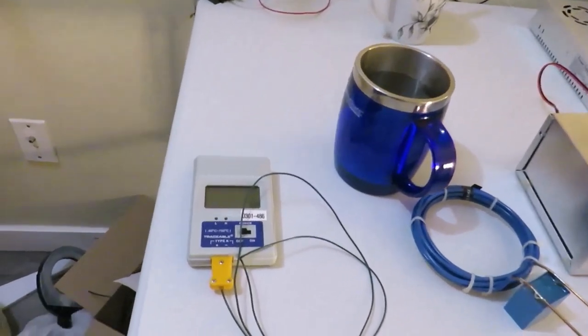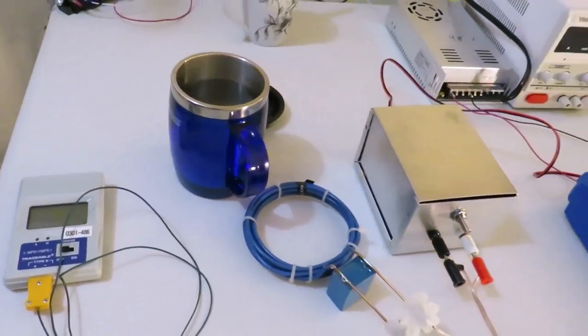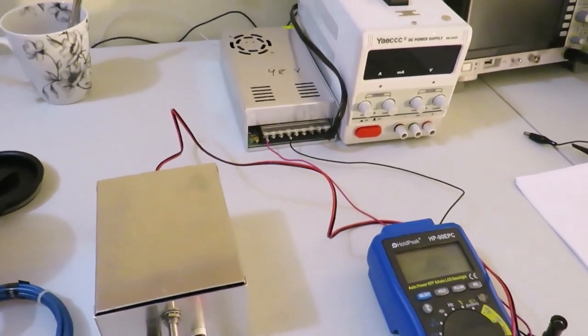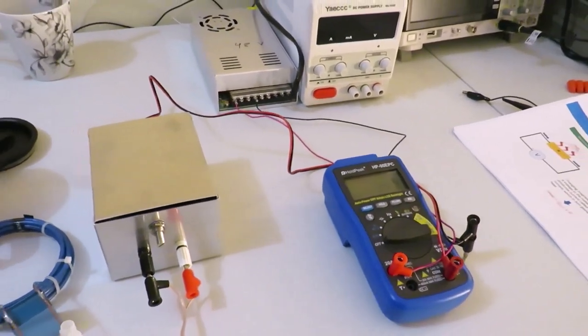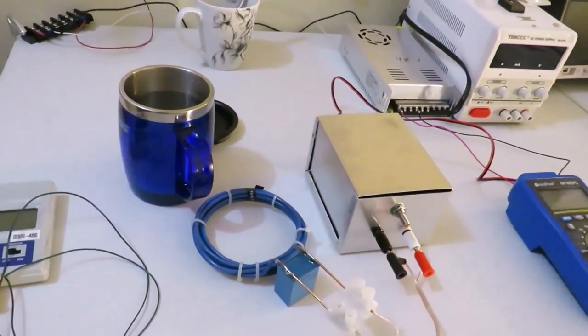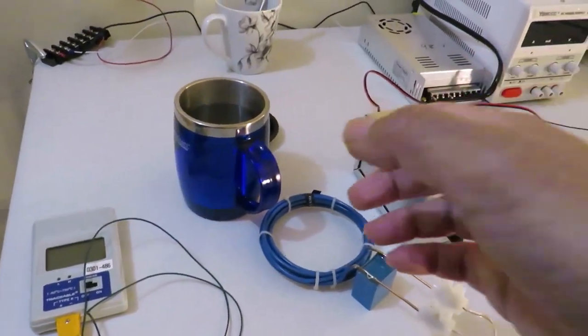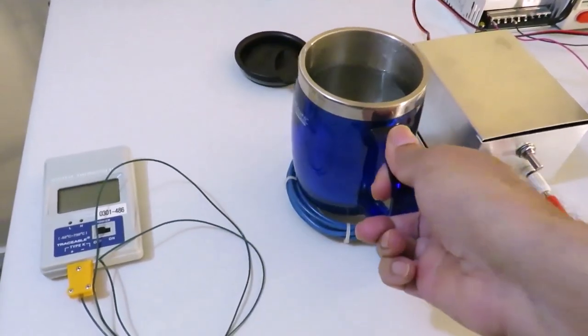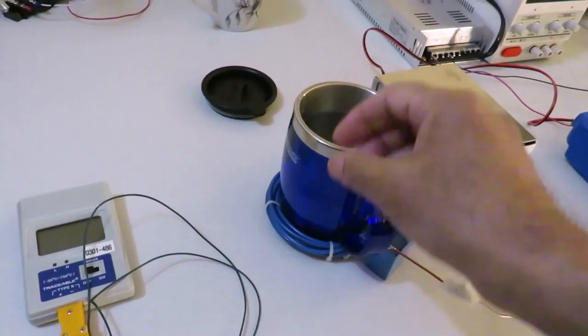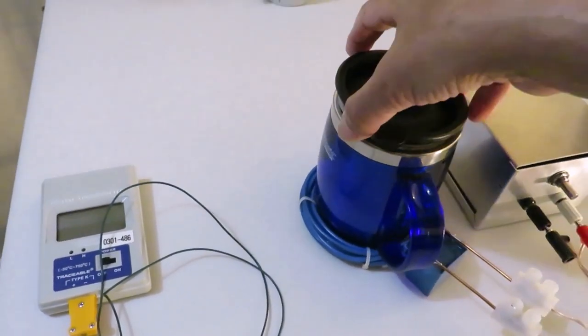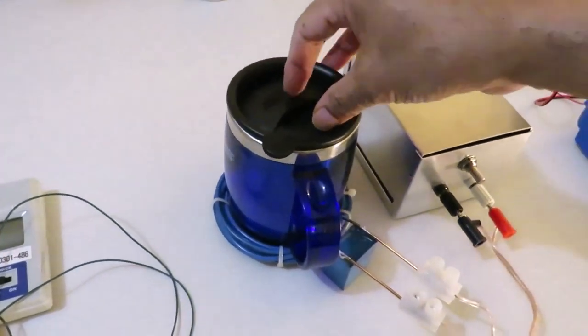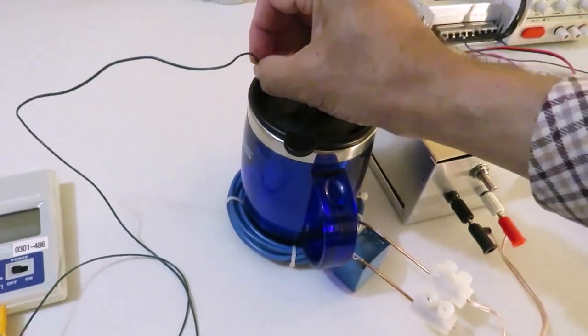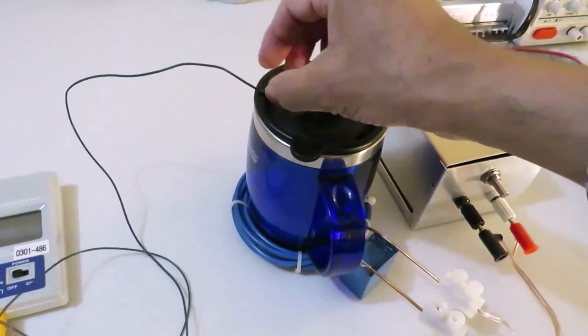Now, I am going to test the coffee mug warmer with 48 volt supply voltage. Because with 48 volt supply voltage, I can get 100 degree centigrade for the coffee. I am taking water.